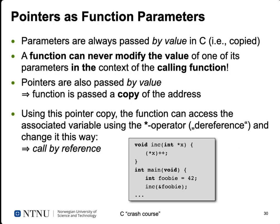We can also pass pointers as function parameters. Parameters are always passed by value in C — they are copied to the function — so you cannot directly manipulate a variable in the calling function. A function always has a copy of these variables. If you want to write a function that directly manipulates the parameters passed, you need to do something else. When we use a pointer instead of a variable, we can pass the memory address.